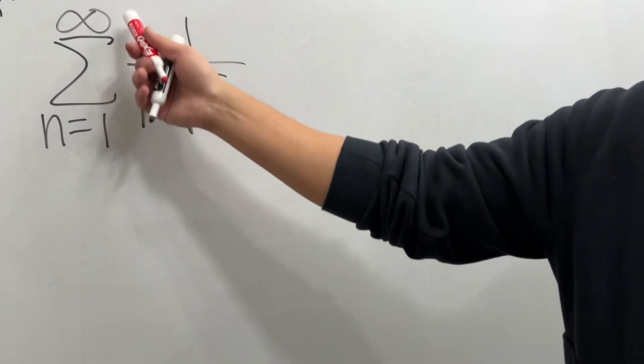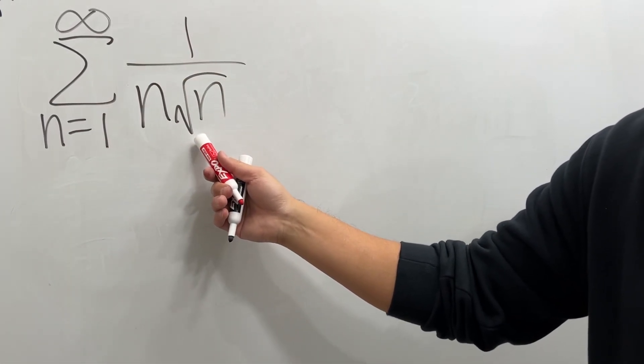Does the series as n goes from 1 to infinity of 1 over n times the square root of n converge or not?